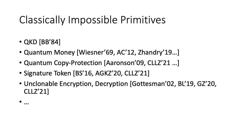For example, quantum key distribution, where two parties can use quantum communication to do key exchange information-theoretically. And there's quantum money, a pioneering idea brought up by Wiesner many years ago, which actually inspired quantum key distribution. And there's quantum copy protection, which we will go into very soon. And signature tokens, where you can delegate a signature to others so that they can only sign once but not twice. And there is unclonable encryption or decryption, where you can make either the ciphertext or the decryption key unclonable.